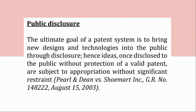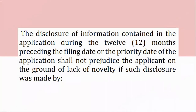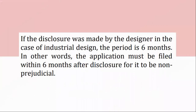When a work has already been made available to the public, it shall be non-patentable for absence of novelty. Exception — Doctrine of non-prejudicial disclosure: the disclosure of information contained in the application during the 12 months preceding the filing date or the priority date of the application shall not prejudice the applicant on the ground of lack of novelty if such disclosure was made by (A) the inventor, (B) a patent officer, and the information was contained (A) in another publication filed by the inventor and should not have been disclosed by the office, or (B) in an application filed without the knowledge or consent of the inventor by a third party who obtained the information directly or indirectly from the inventor, or (C) a third party who obtained the information directly or indirectly from the inventor. IPC, Section 25. If the disclosure was made by the designer in the case of industrial design, the period is 6 months.